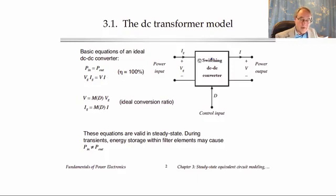these equations also implicitly assume that the converter operates in steady state. So for example, if there are inductors and capacitors inside the converter that can store energy, then during transients those reactive elements may store or release energy, and during the time that they're doing that, the input and output powers could differ. But in steady state, there's no net change in energy or stored energy in the reactive elements, and then we get this first basic equation.